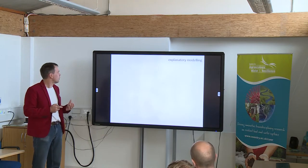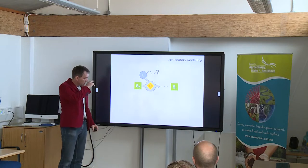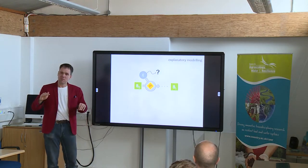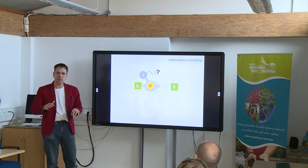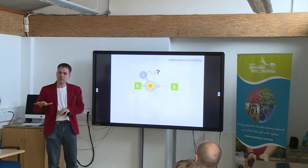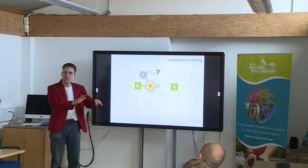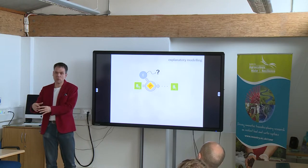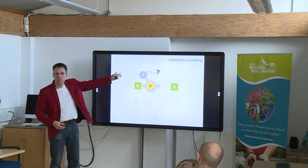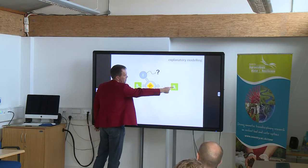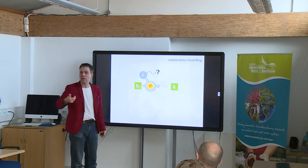A different type of modelling is explanatory modelling, and it is fundamentally different. This is the main point I want to get across in this seminar — that these modes of modelling are fundamentally different. If you use a model for prediction, you are doing something completely different than if you use it for explanatory modelling. In explanatory modelling, we are not interested in the final state — the assumption is that we know what the final state is; instead we are trying to explain how we got there.